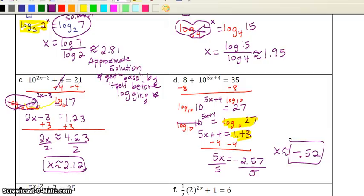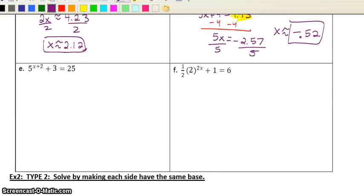Let's move on. E is actually very similar to what we've just been doing. But F is a little different. So why don't we try F? Again, I'm going to try to get the base by itself. The only thing is for this situation, I also want to get rid of the 1 half before I log both sides.